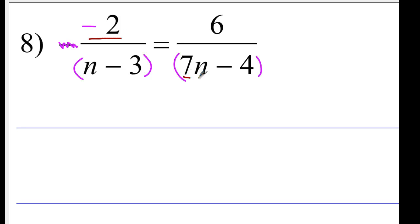You can do this right here. Negative 2 times 7n, that's negative 14n. Then, negative 2 times negative 4, that would be positive 8. Equals, and you multiply this together. 6 times n, that would be 6n. 6 times negative 3, that would be negative 18. You can also do that without writing the first equation with parentheses.